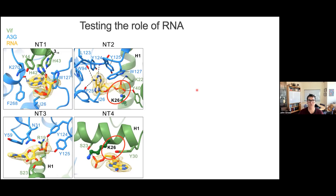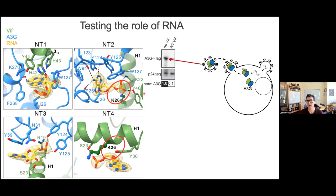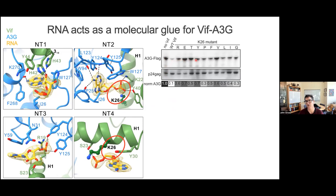For this, we targeted lysine 26 of VIF because it only contacts RNA. We did a packaging assay. In the absence of VIF, A3G gets packaged and can restrict — VIF causes A3G to not get packaged. Caroline scanned a handful of residues and found the only residue that actually affected function was K26, our lysine at position 26. This is consistent with our structure, and we argue that RNA acts as molecular glue.